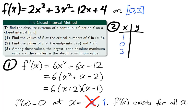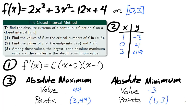In step 2, we collect the x values from step 1 and the x values of the endpoints, and we plug those x values into the function f to calculate their y values. For step 3, we have an absolute maximum value of 49, and one absolute maximum point, (3,49). We have an absolute minimum value, negative 3, and one absolute minimum point, (1,-3).